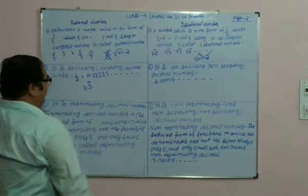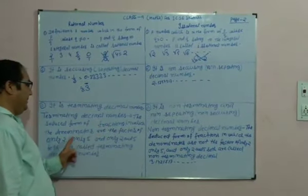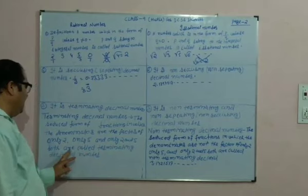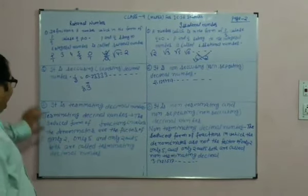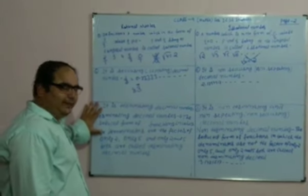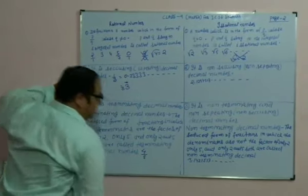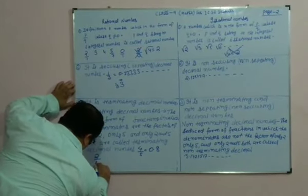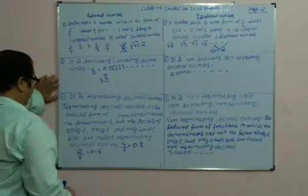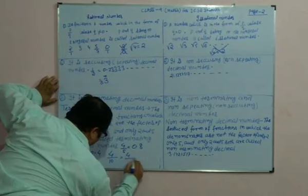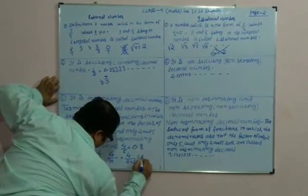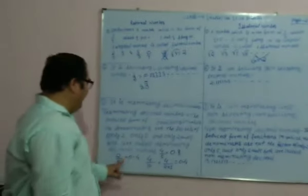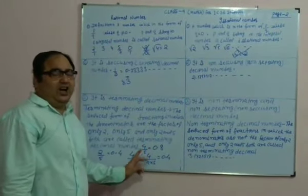A terminating decimal number is one whose fraction has a denominator that is a factor of only 2, only 5, or both 2 and 5. So a terminating decimal number is part of the rational numbers. For example, 4/5 when simplified becomes 0.8, and 2/5 equals 0.4. Since 10 is a factor of 2 and 5, these are terminating decimals.